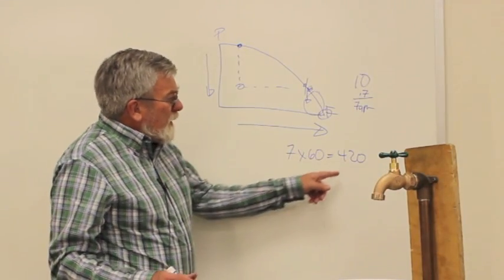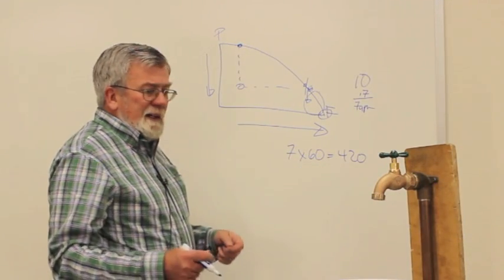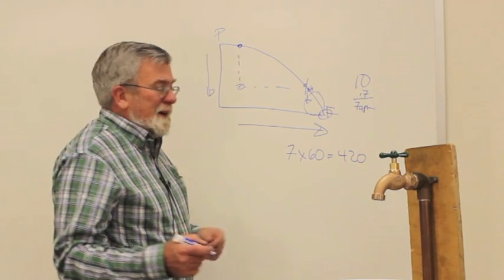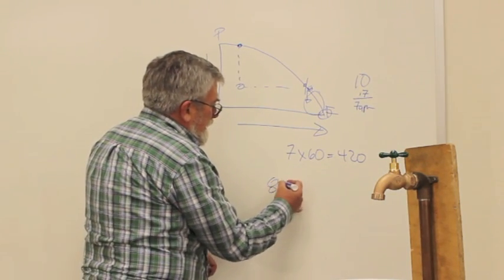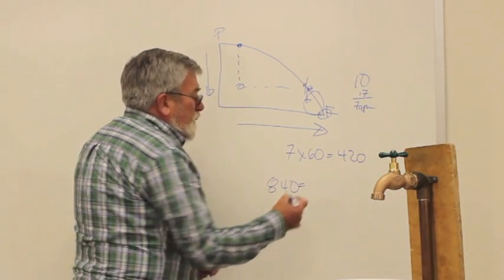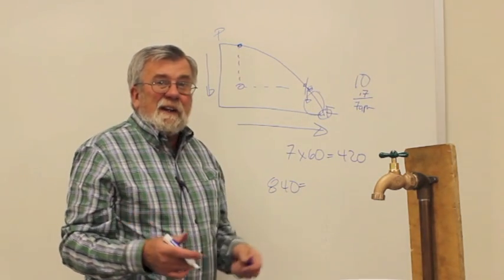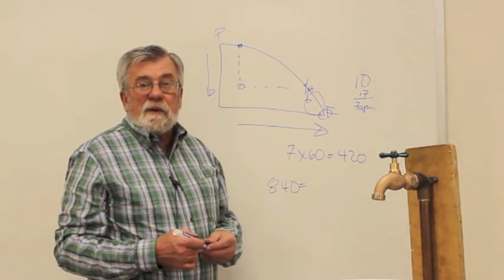So if I have 420 gallons per hour and let's say I'm using half-gallon-an-hour emitters, I can double that figure to 840. So on any one drip zone I can have 840 half-gallon-an-hour emitters.